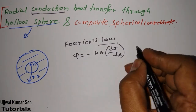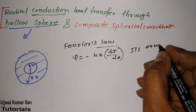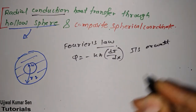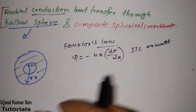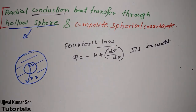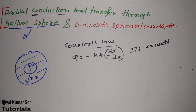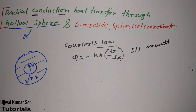Fourier's law states: q is equal to minus k A dT/dx. This law is only for conduction, so you will not get confused. If you want to derive radial conduction heat transfer through a hollow sphere, we start from this law.